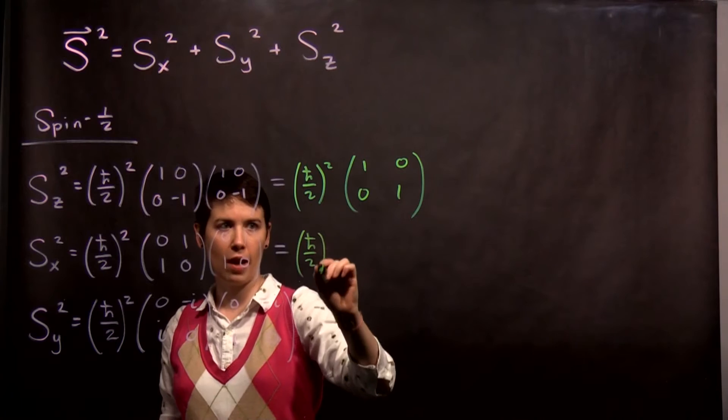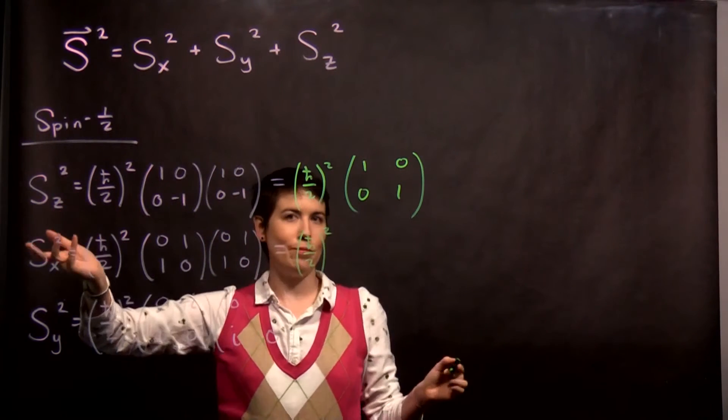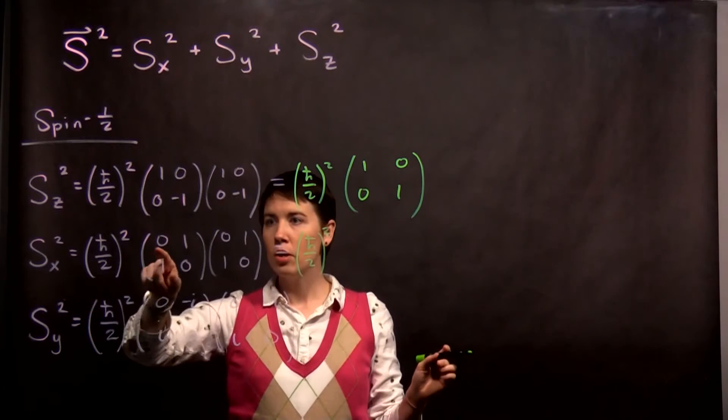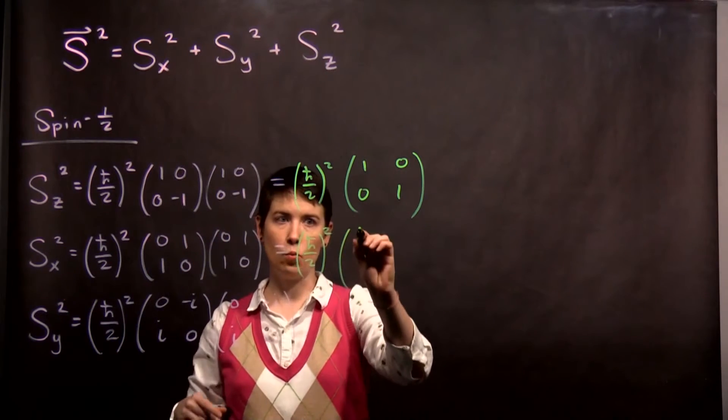Now we'll do it for SX. And interestingly, I have a habit of doing Z first, because that's the basis we're working in. If you did X first, there's nothing wrong with that. So now, row column, zero times zero, one times one is one.